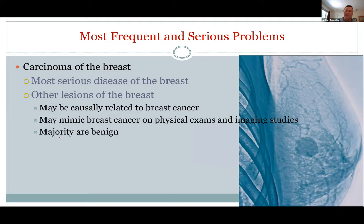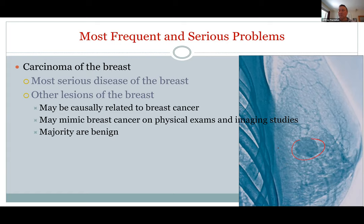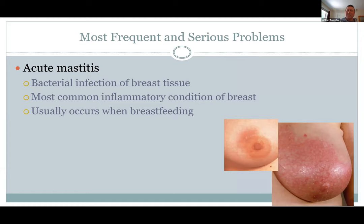Breast cancer — carcinoma of the breast — is up there among the leading killers of women. Less than one percent of breast cancers occur in men, though they can get it. Mammographies and self-examinations are important; the majority of tumors will be benign. Another problem is mastitis — an infection in the breast tissue usually during breastfeeding, causing painful redness when bacteria grow in the ducts.